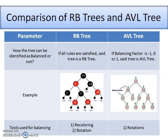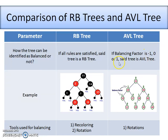The next parameter is how we decide whether a tree is balanced. For Red-Black trees: if all five rules are satisfied and the tree is a binary search tree, then it is a balanced Red-Black tree. For AVL trees: if the balance factor is minus one, zero, or one for every node, and the tree is a binary search tree, then we can say it is a balanced AVL tree.